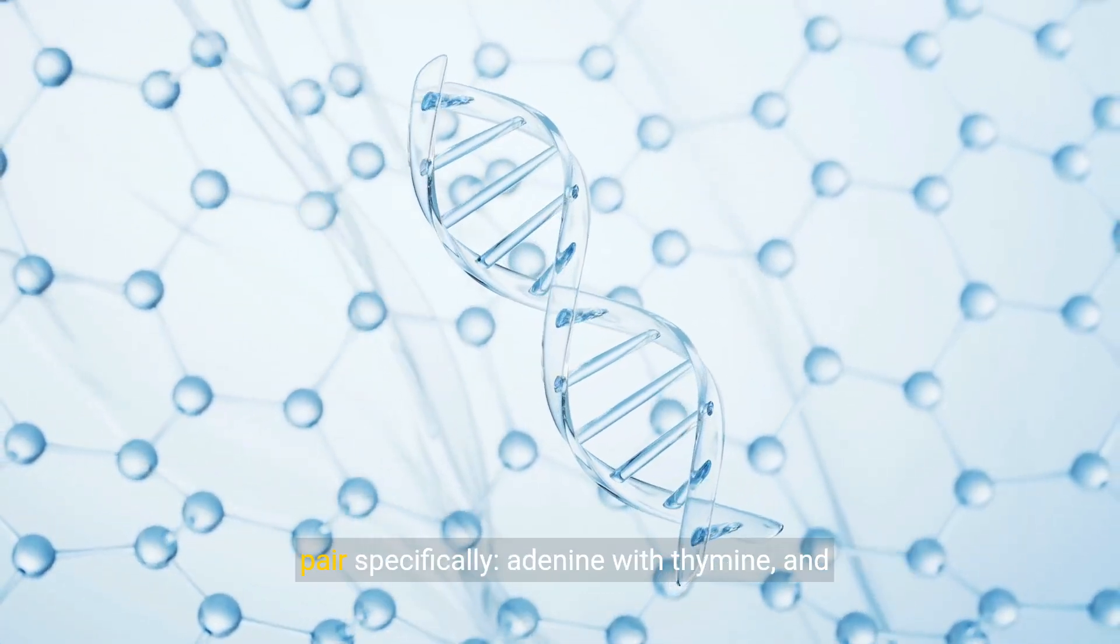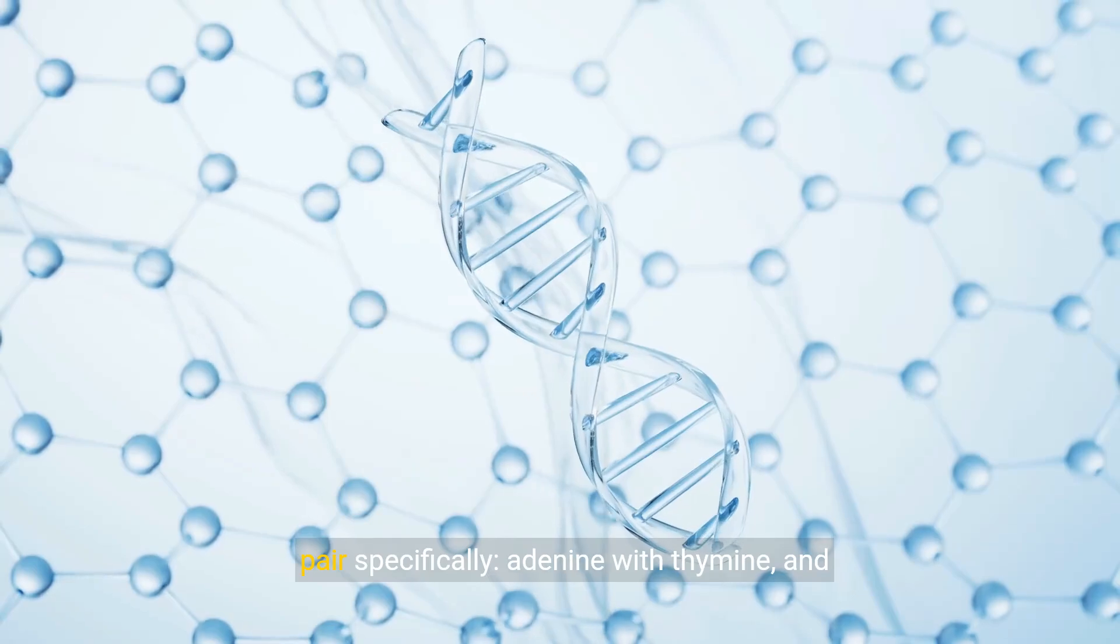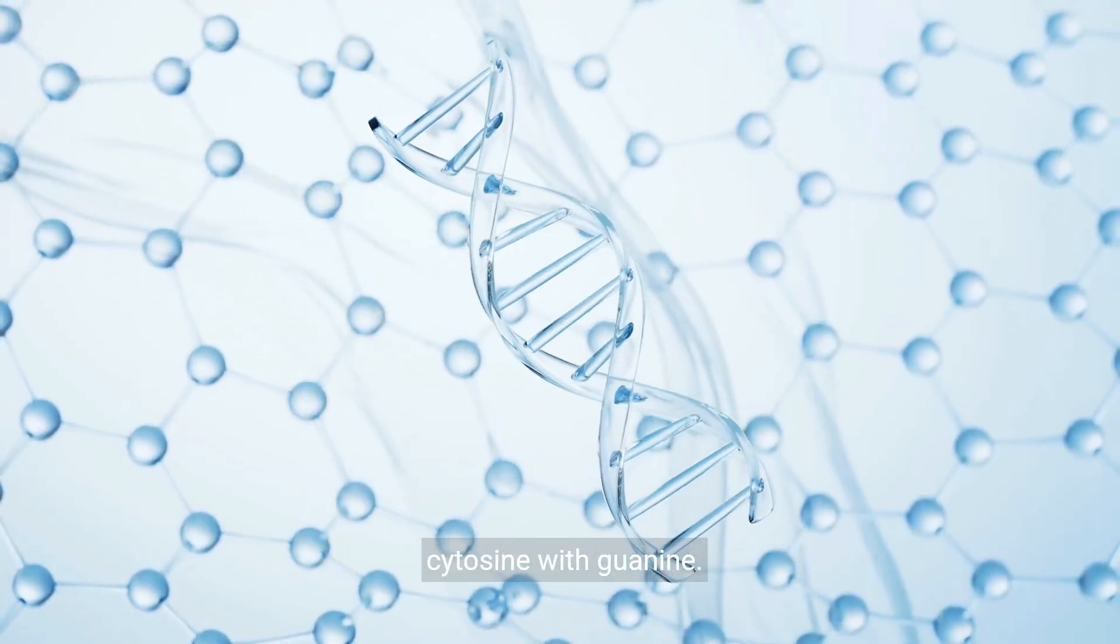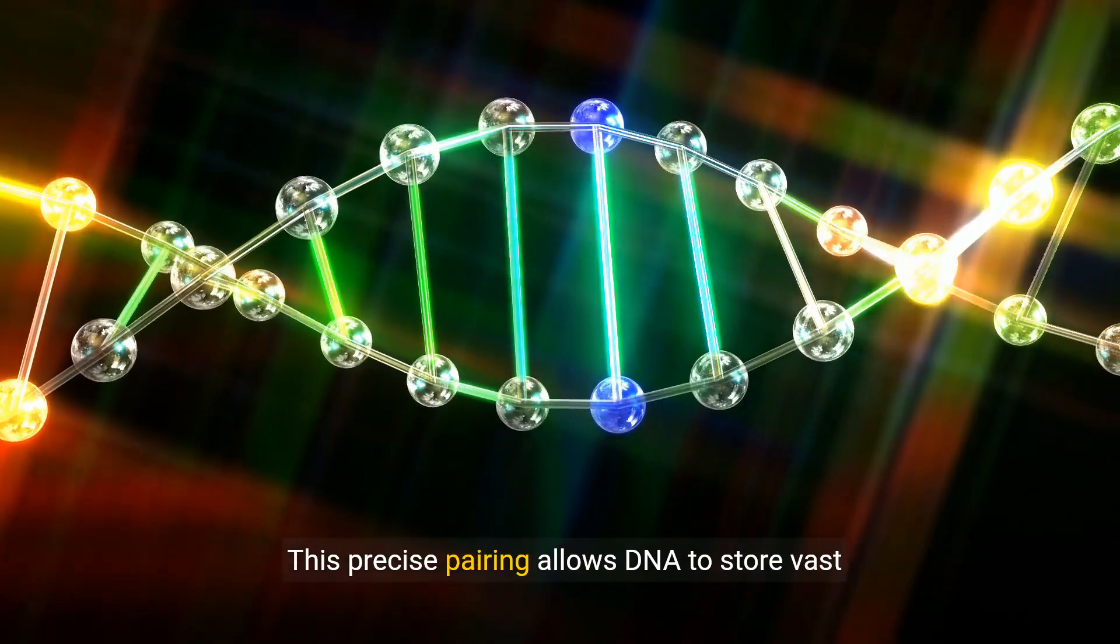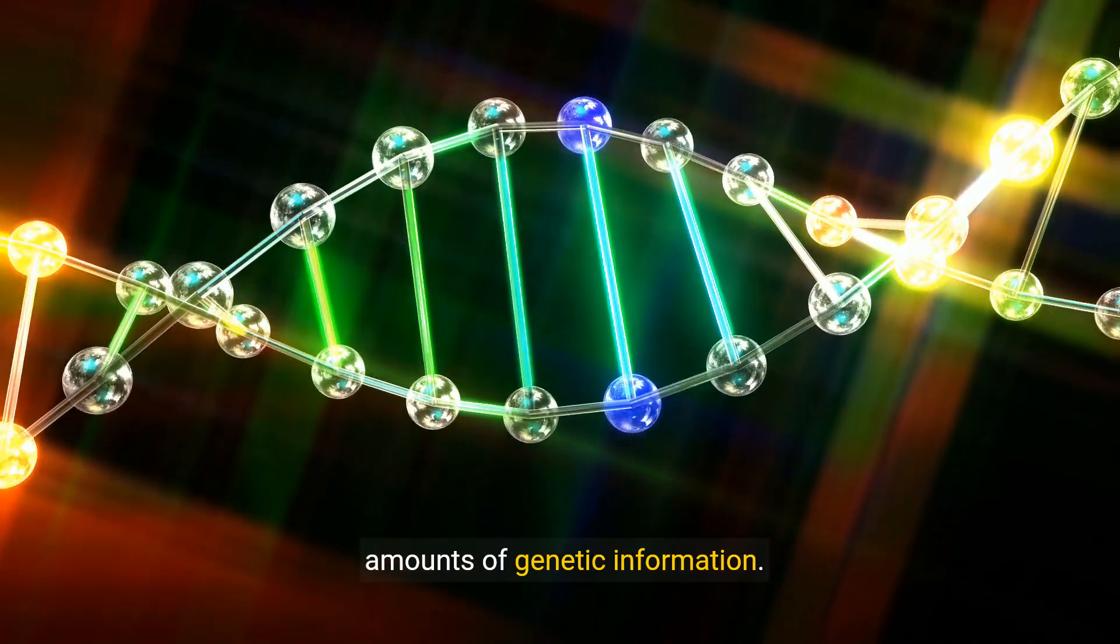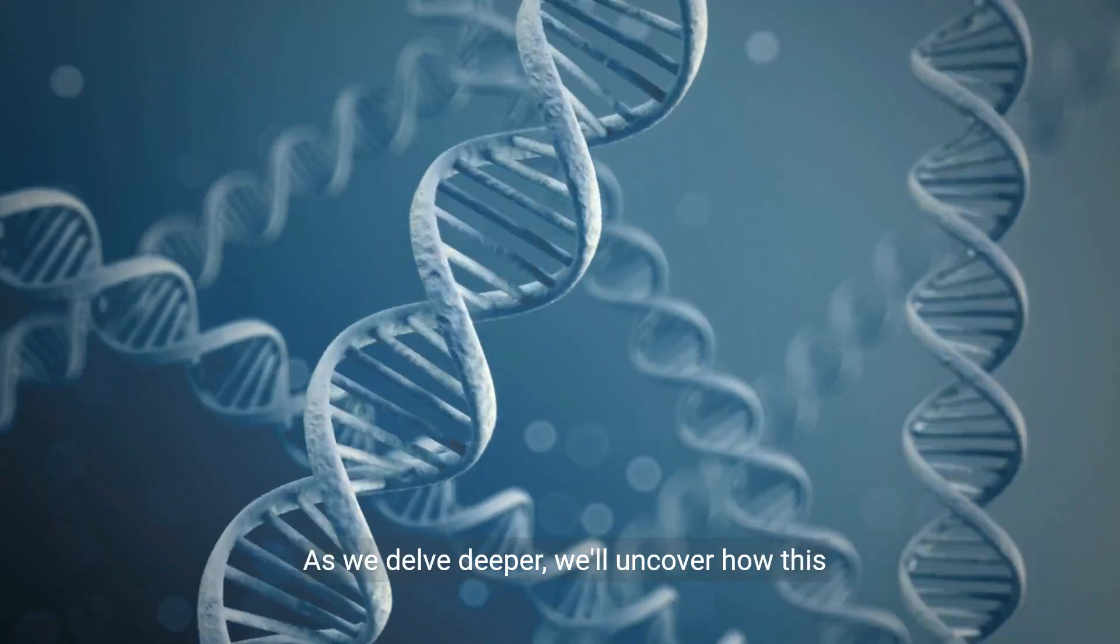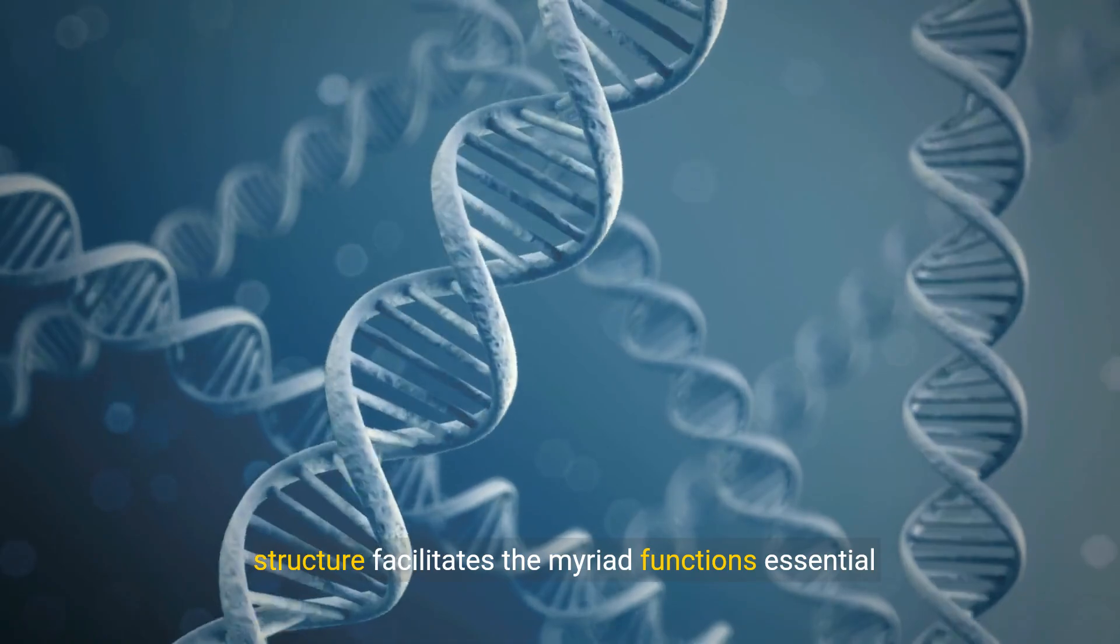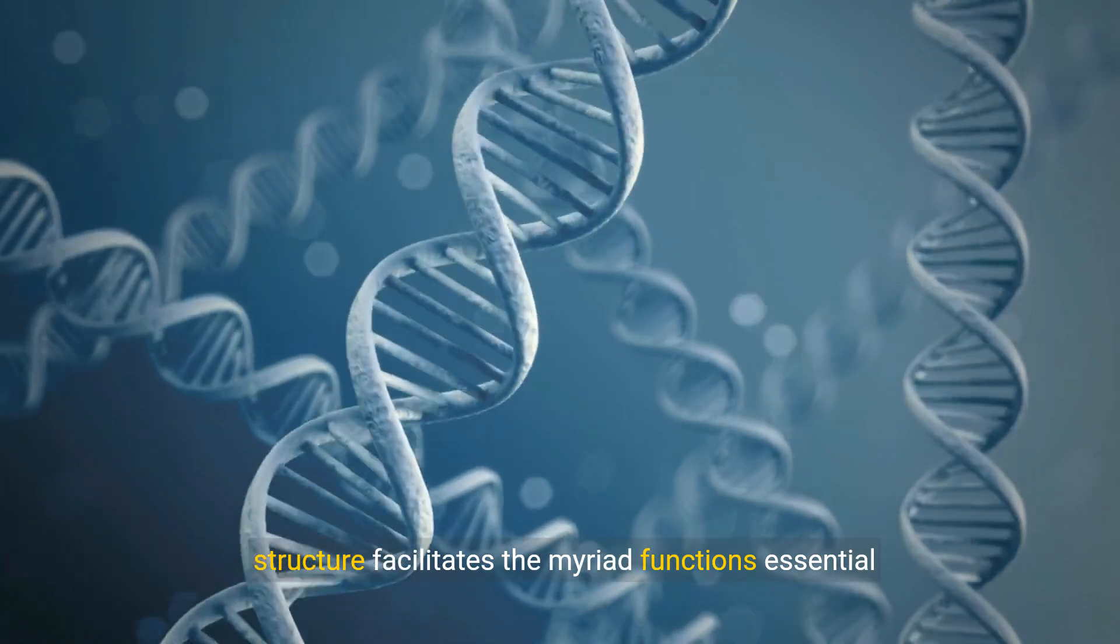These bases—adenine, thymine, cytosine, and guanine—pair specifically: adenine with thymine and cytosine with guanine. This precise pairing allows DNA to store vast amounts of genetic information. As we delve deeper, we'll uncover how this structure facilitates the myriad functions essential to life.